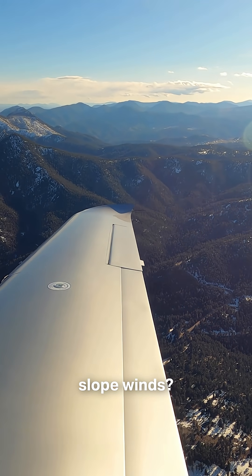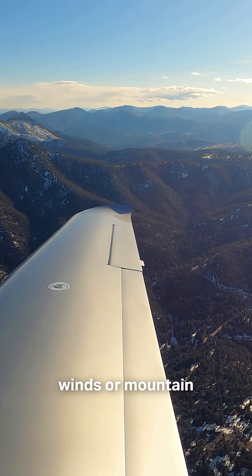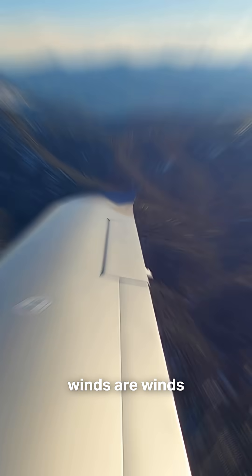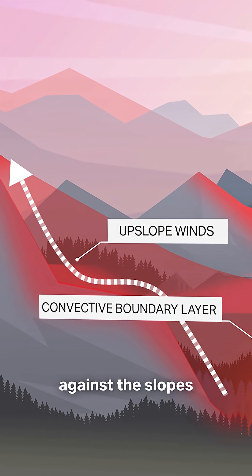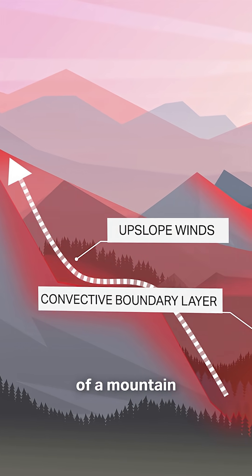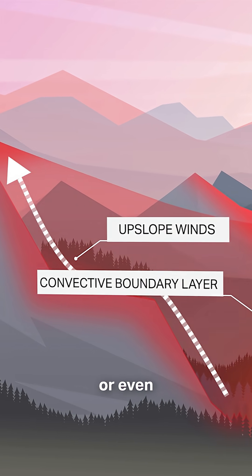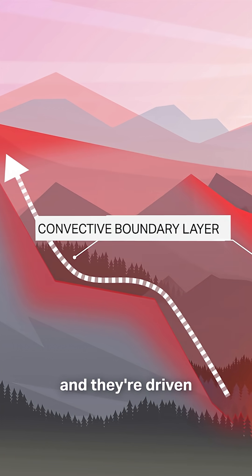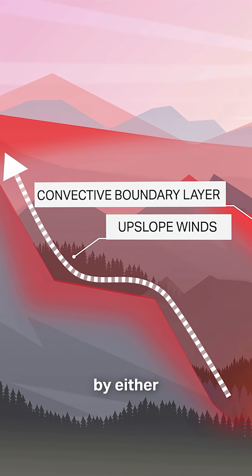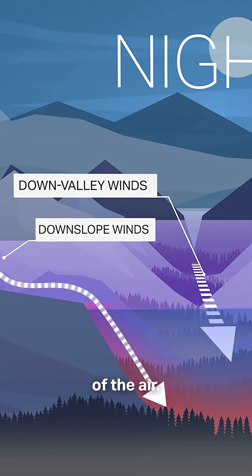What are mountain slope winds? Slope winds or mountain slope winds are winds that form against the slopes of a mountain range or even just a large hill, and they're driven by either the heating or the cooling of the air.